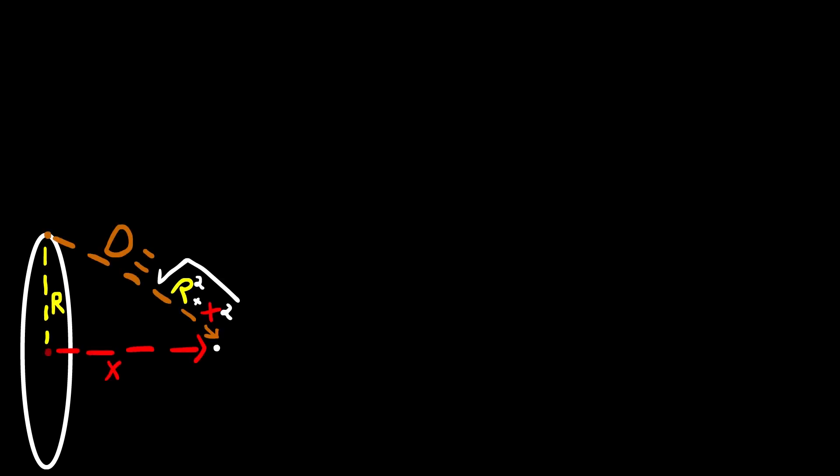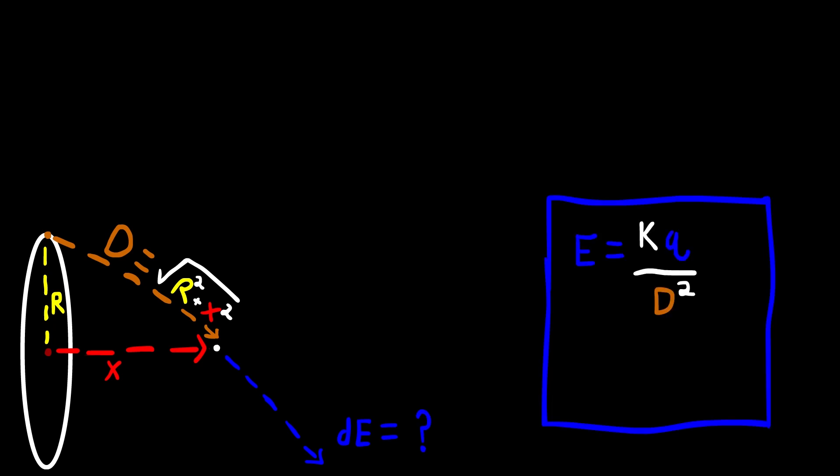First, you need the distance from the edge of the ring to the point. Following this, you need the derivative of energy, which the calculations can be seen on the right.